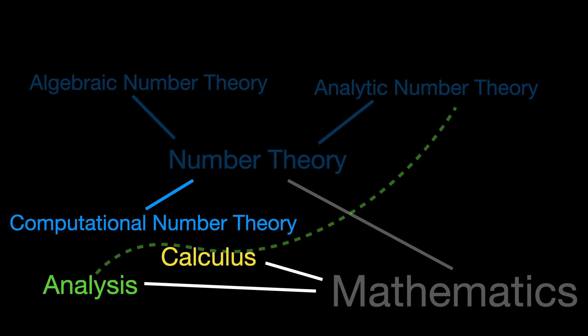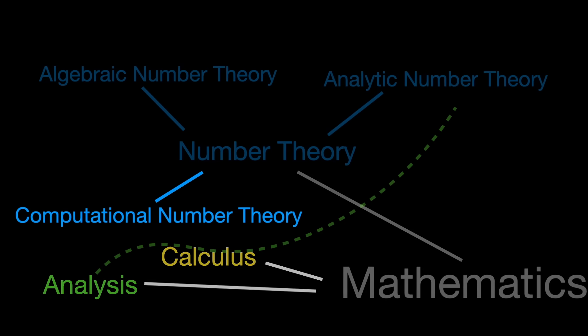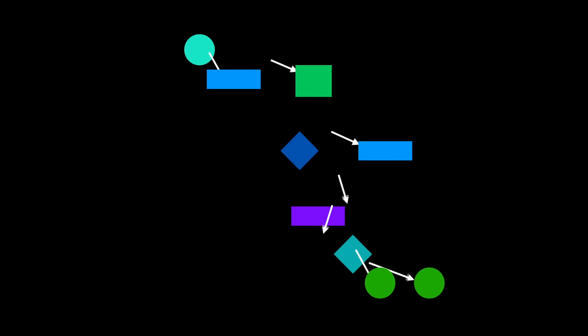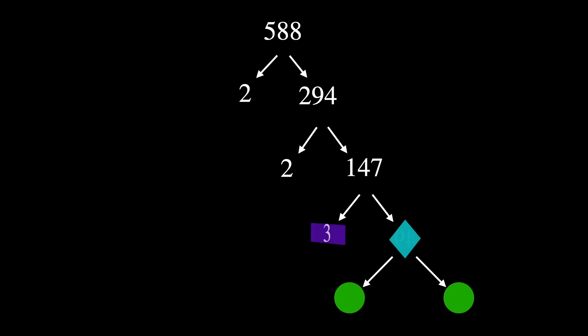Computational Number Theory. This branch of number theory focuses on developing algorithms to solve numerical problems related to integers and other number theoretic issues. It involves the creation and application of computational methods to perform calculations on large numbers, such as factoring integers, finding primes, and computing discrete logarithms.